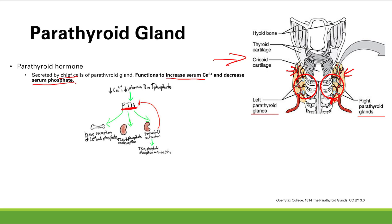Vitamin D goes to the intestines, as you can see here, and increases calcium as well as phosphate absorption from the food you eat. The food with calcium and phosphate goes down to the intestines into the lumen, and vitamin D tells the intestine to absorb all of that.